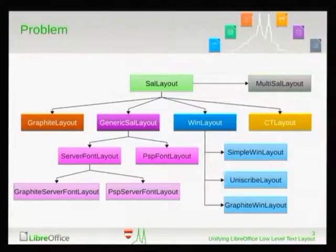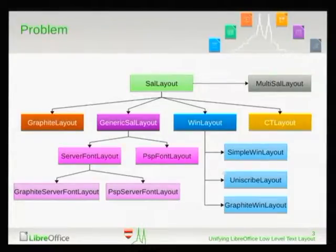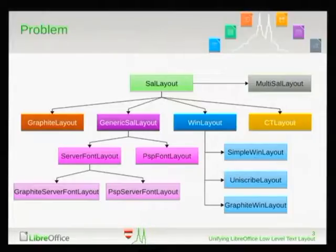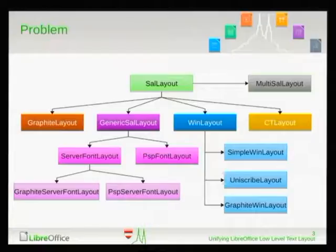On Mac OS, we have only one layout class that uses Core Text, which does not support graphite fonts. So graphite is not supported on Mac OS, only on Windows and Unix. And we have MultiSalLayout — it took me five years to understand that MultiSalLayout does font fallback. It's only used on Unix; Core Text does its own font fallback and we don't control it.